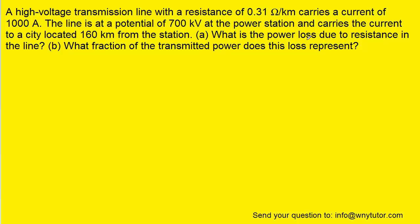Now in part A, when they ask what is the power loss due to resistance in the line, what we have to figure out first is the resistance in that line. And somewhat strangely in this problem, they didn't give us the resistance directly. They gave it to us in terms of 0.31 ohms per kilometer. Now that's not a usual value for the resistance, but we do know that the line is 160 kilometers long. So if we multiply the resistance per kilometer by the number of kilometers, those kilometers will cancel out and that's going to leave us with the resistance in ohms. And it turns out to be 49.6 ohms.